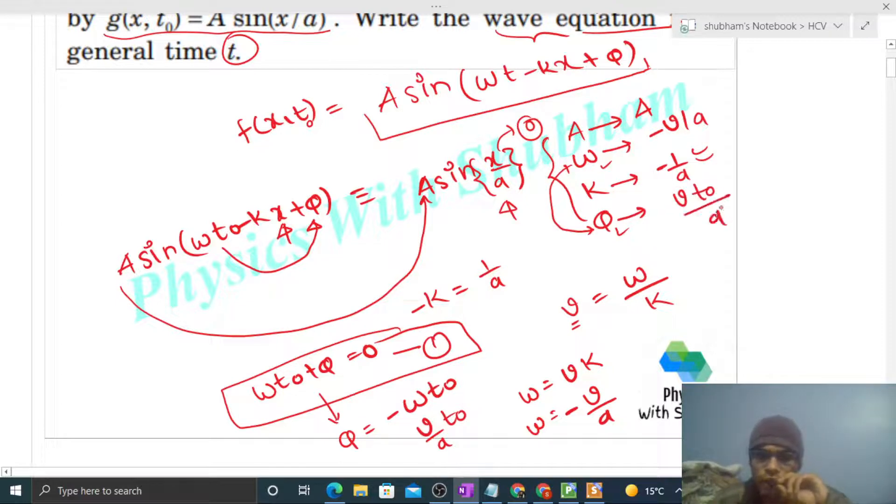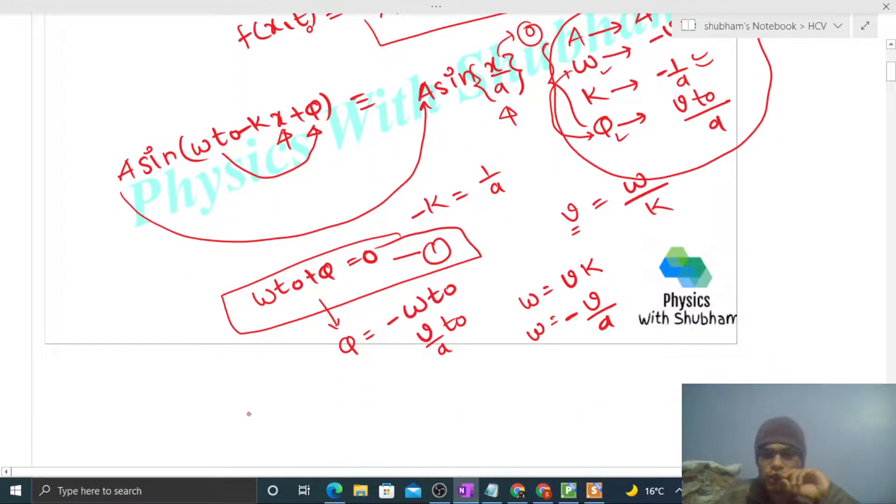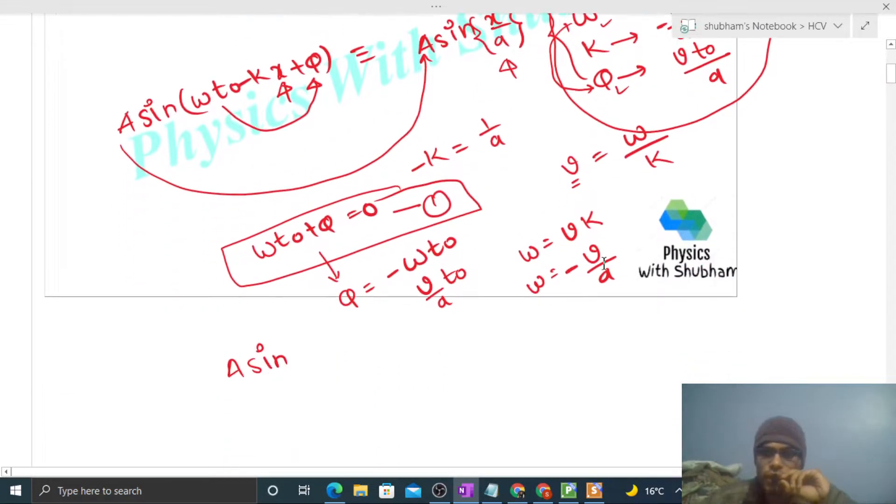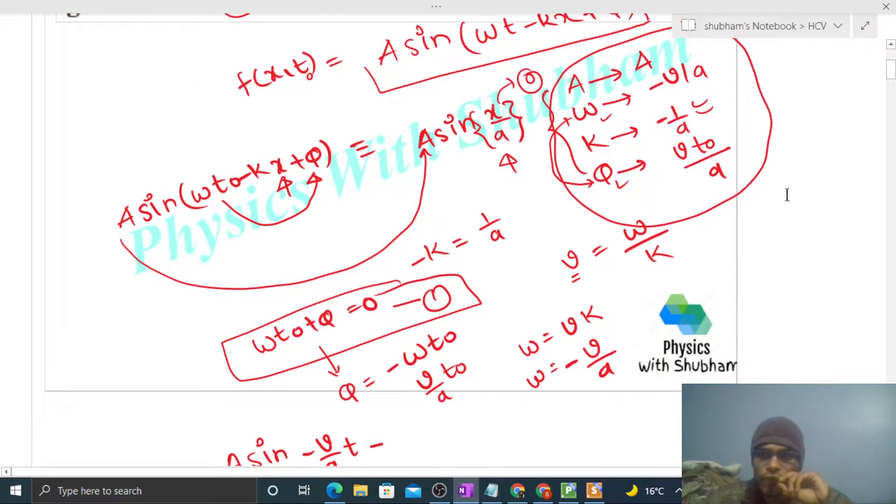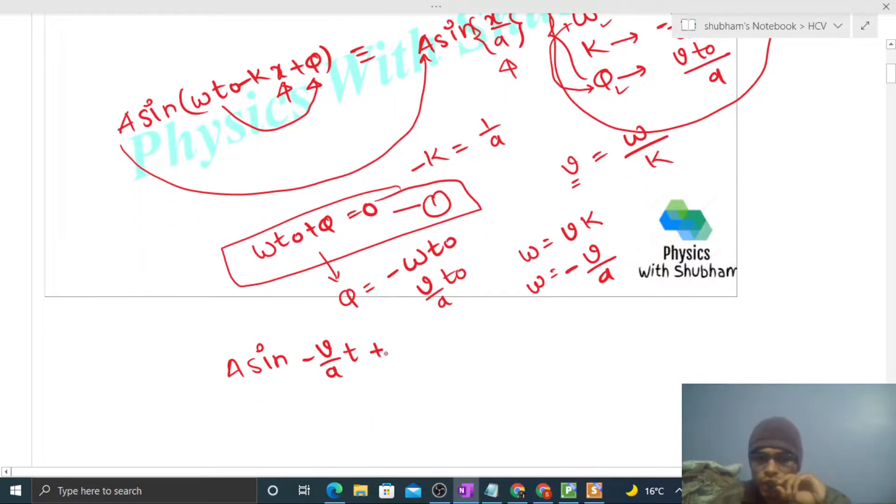Now just put the values in the equation. Let me write it: A sin(ωt) where omega is minus v/a, so minus v/a times t, minus kx where k is minus 1/a so this becomes plus x/a, plus phi where phi is v·t₀/a. So this is your required equation.